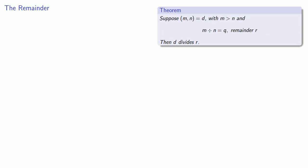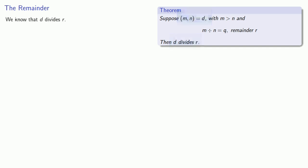So earlier, we found the following result. Suppose the greatest common divisor of M and N is D, and M is greater than N, and M divided by N is some quotient with remainder R. Under these circumstances, this greatest common divisor D also divides R. And so we know that D divides R.